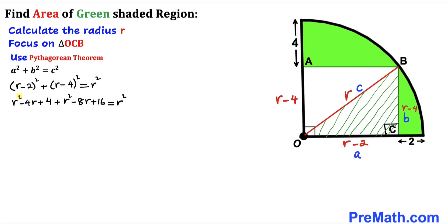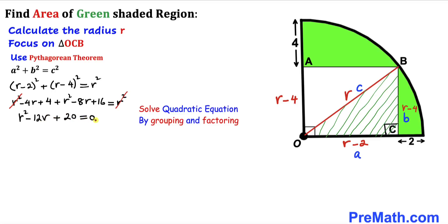The R squared terms on the left-hand side cancel with the R squared on the right. Combining like terms, we get R squared minus 12R plus 20 equals 0. We now have this quadratic equation, which we are going to solve by grouping and factoring.